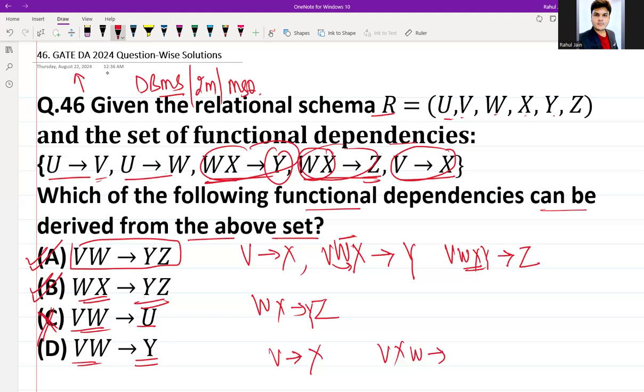Option D: VW is deriving Y. So we can derive X, and VW with X can derive... W and X derive Y. So now we can derive Y also. Thus option D is possible.